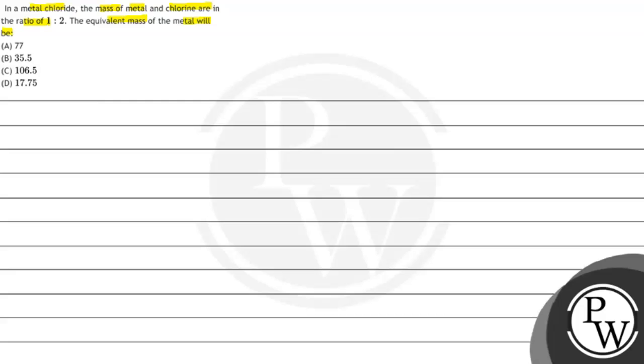35.5, option C: 106.5, option D: 17.75. So here, the key point is equivalent weight.